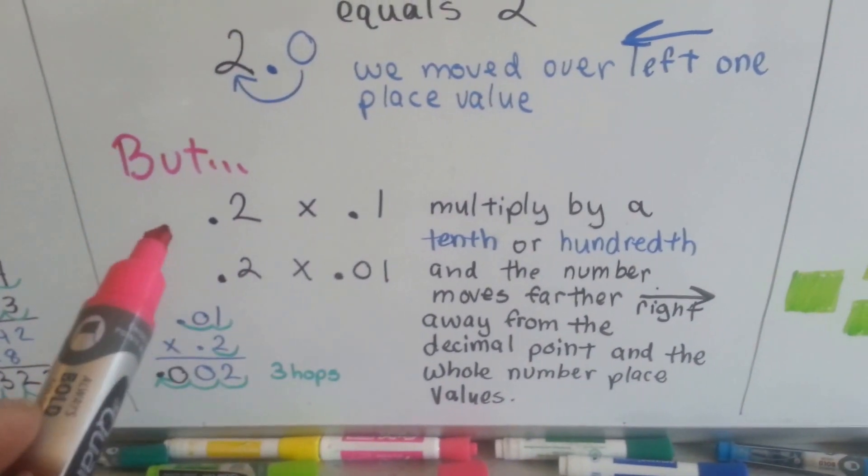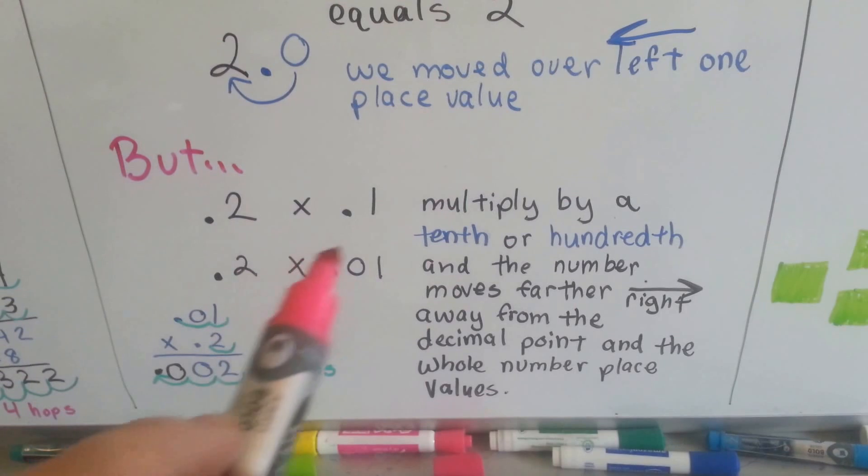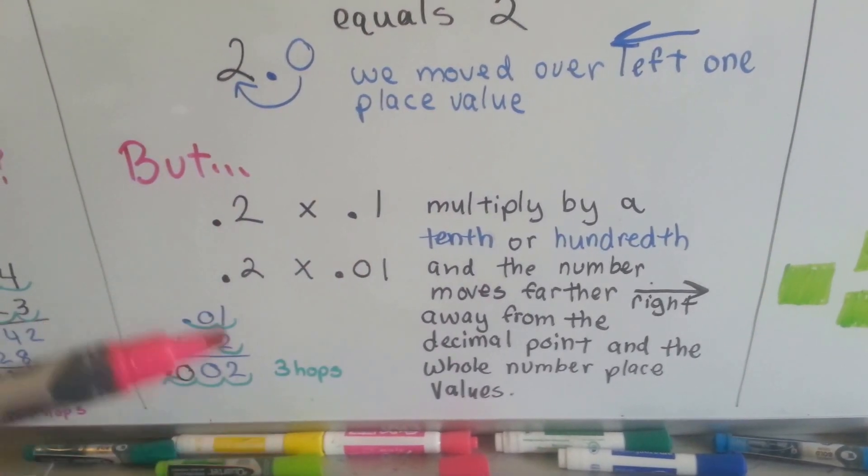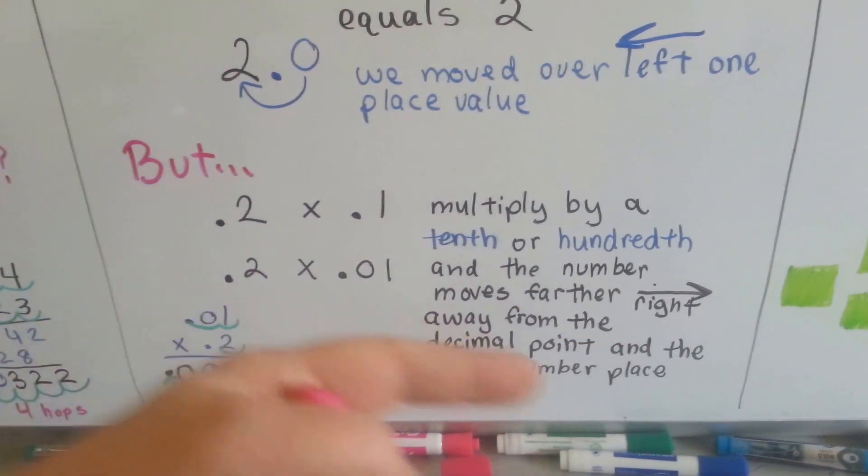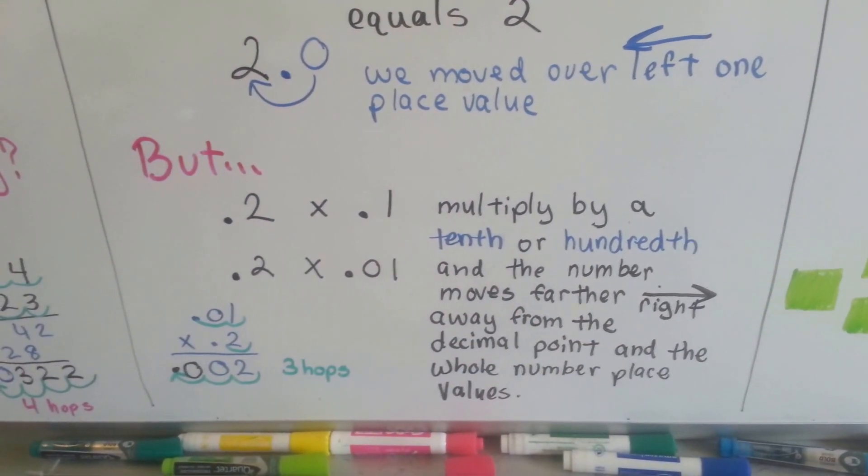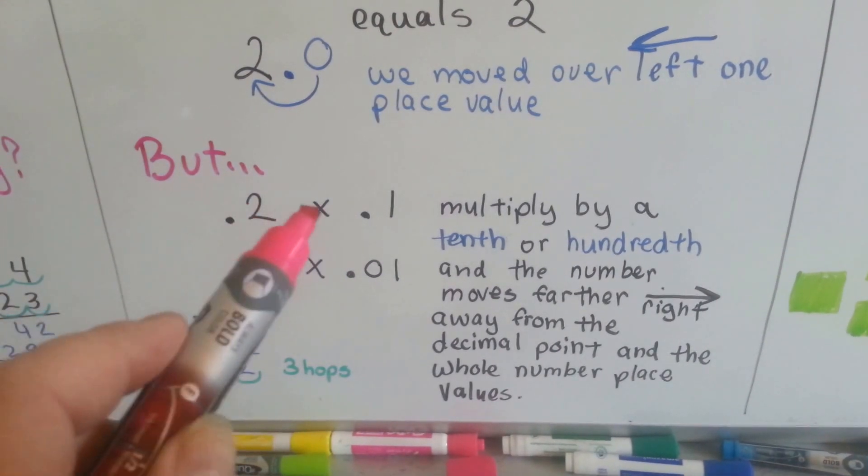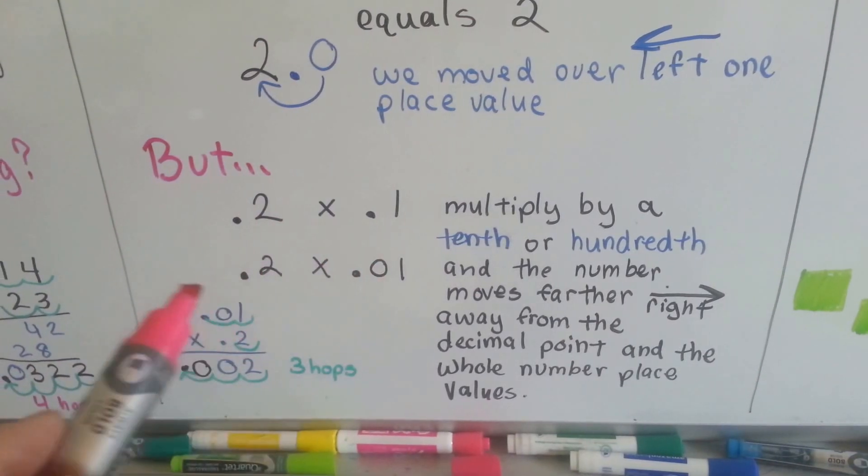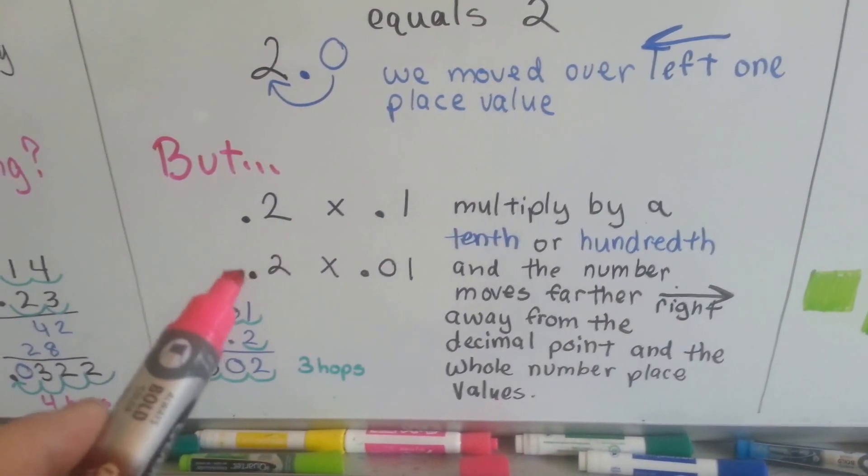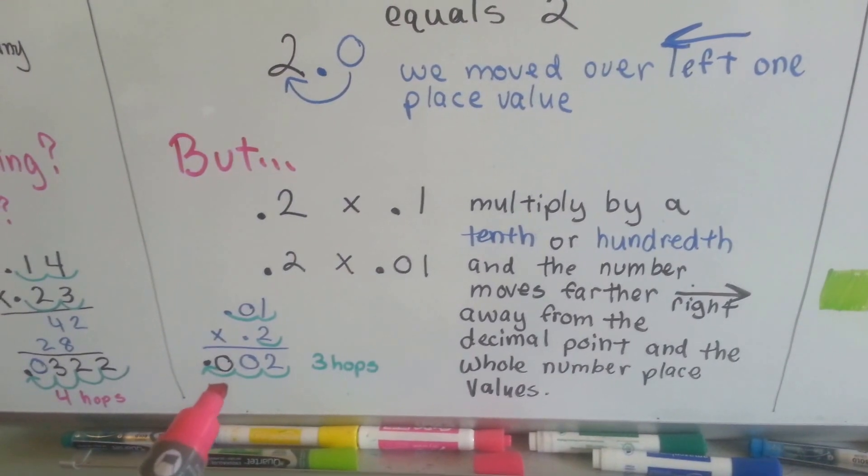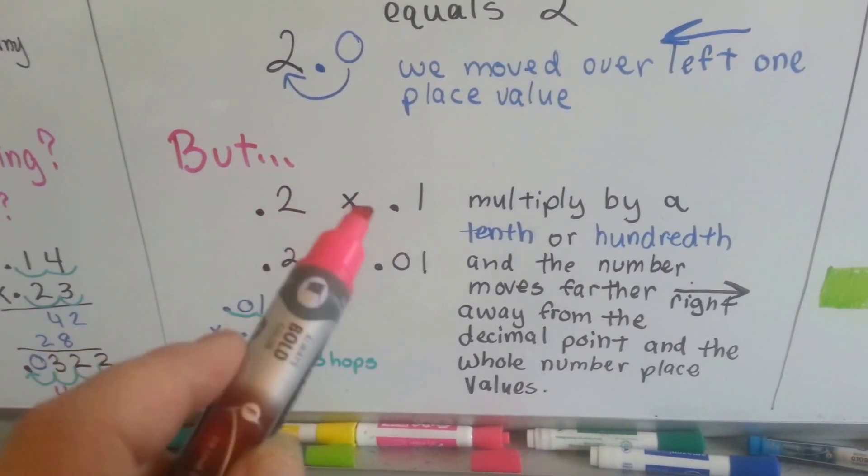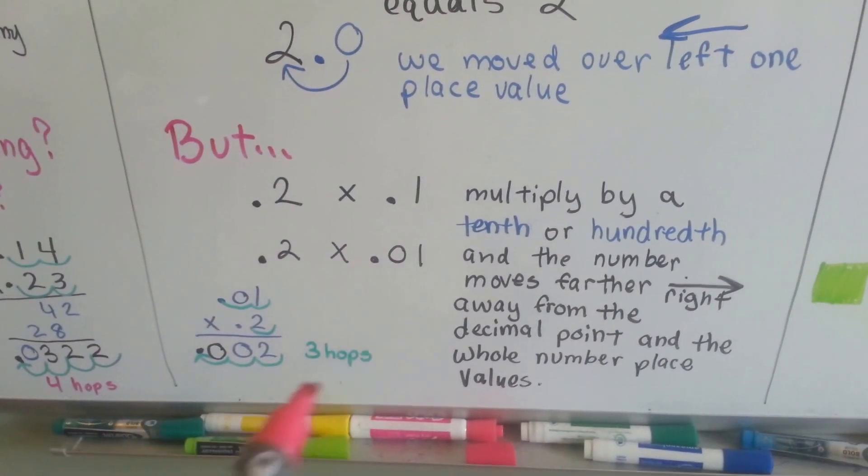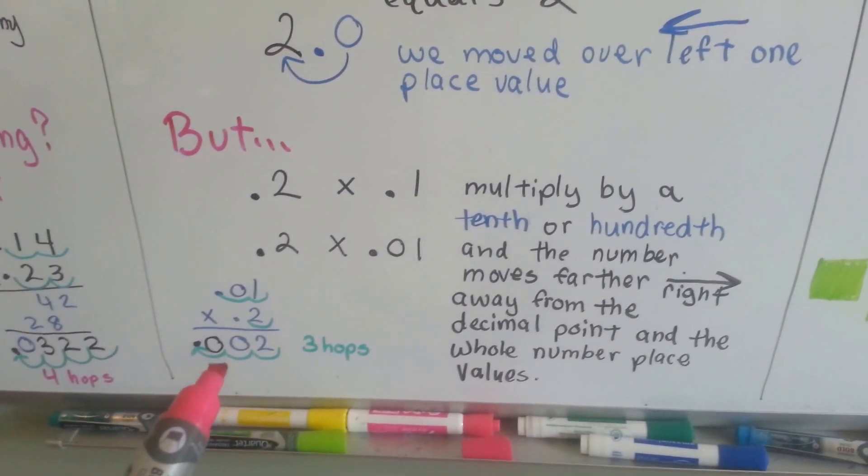But when we multiply by a tenth or a hundredth, so now we have a decimal and a decimal, what happens is it moves our number farther right, farther this way, away from the decimal point. So if we multiply 2 tenths by 1 tenth, it's going to be 2 tenths. 2 tenths times 1 hundredth becomes, I'm sorry, this is 2 hundredths. If we multiply 2 tenths by a hundredth, it becomes 2 thousandths.